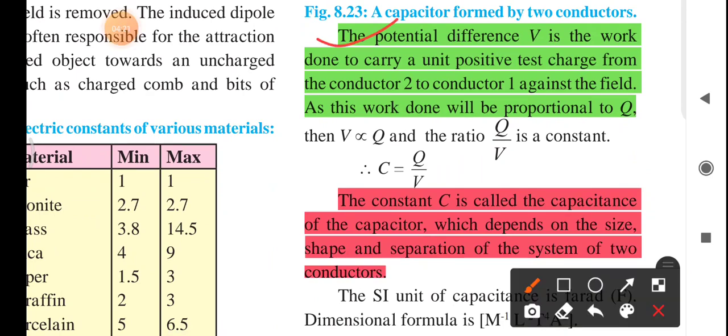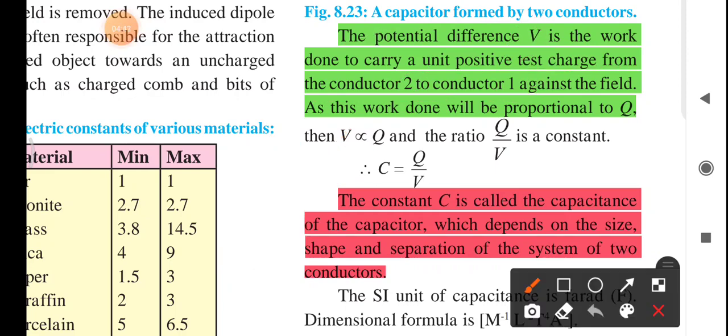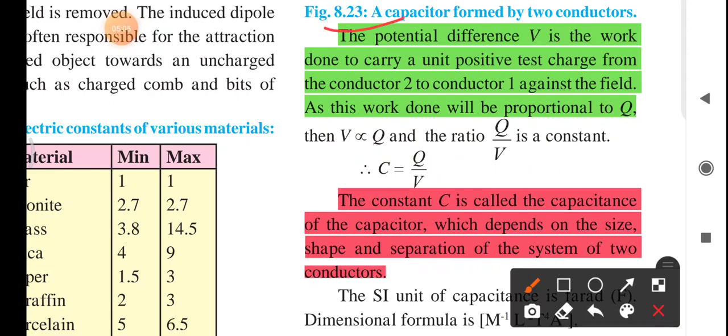The potential difference V is the work done to carry a unit positive test charge from the conductor 2 to conductor 1 against the field. The work done will be proportional to Q. Potential difference V is directly proportional to Q. The ratio Q by V is constant. This Q by V ratio is called as the capacitance.